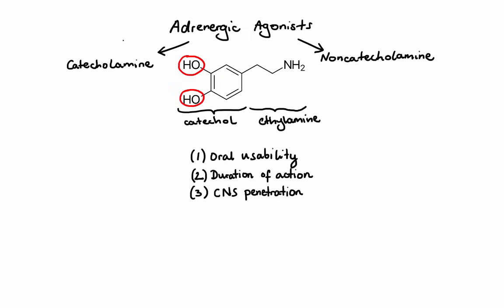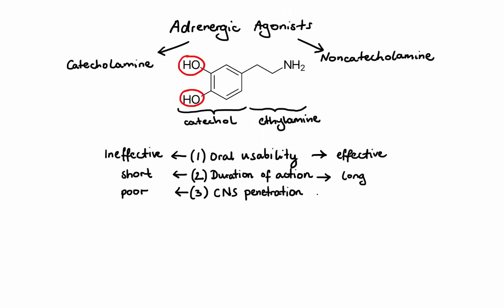In terms of oral usability, catecholamines are completely ineffective, as they are quickly metabolized by COMT and MAO enzymes in the gut, liver, CNS, and even inside the neurons. Furthermore, hydroxyl groups on the catechol portion make the whole molecule polar, which results in poor penetration into the CNS. Non-catecholamines, on the other hand, lack the catechol hydroxyl groups, and because of that, they are not a good substrate for COMT and are metabolized by MAO very slowly. As a result, non-catecholamines can be given orally, have a much longer duration of action, and because they are less polar, they also penetrate into the CNS fairly easily.